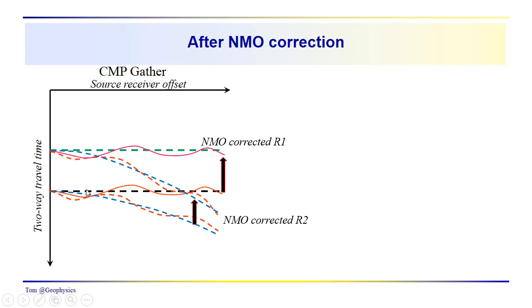We have these undulations above and below what should be a flat reflection event. That's what we normally get when we're looking at the common midpoint response. So we get a flattening when we go through the NMO correction. However, since we have these static features that are superimposed on the reflection event,